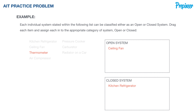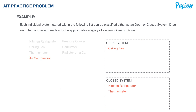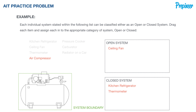What about a thermometer? Here's a basic schematic with our system boundary. A thermometer is supplied heat from its surroundings to the thermometer bulb, but no mass is actually transferred. Therefore, we would drag the thermometer into the closed system category.